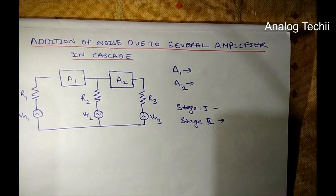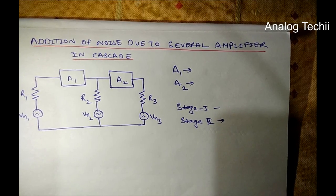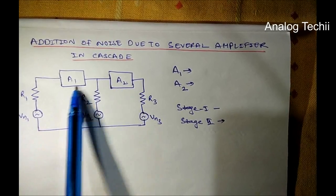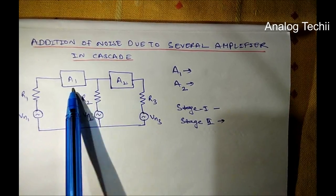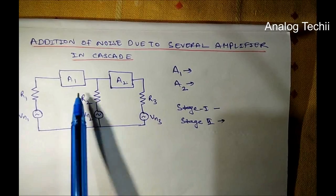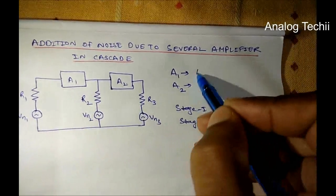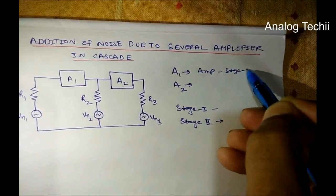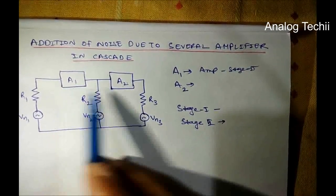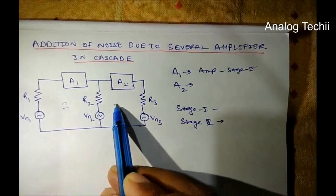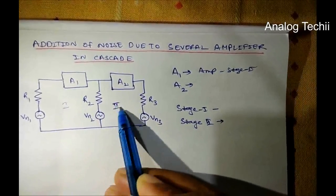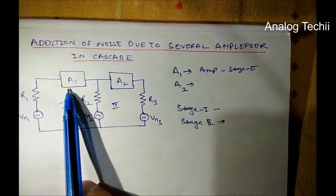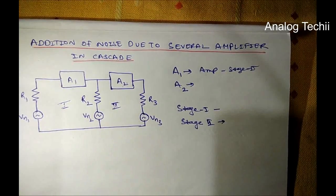Hello. Now we will study today addition of noise due to several amplifiers in cascade. We will see here there are two amplifiers connected in cascade: A1 and A2. We have divided these amplifiers into stage 1 and stage 2. Stage 1 amplifier is A1 and stage 2 amplifier is A2.